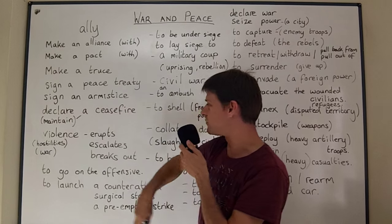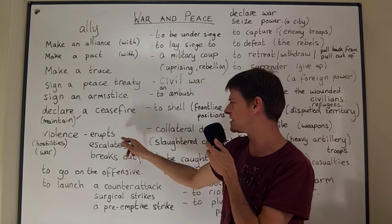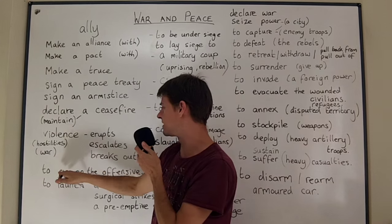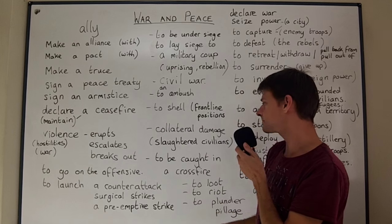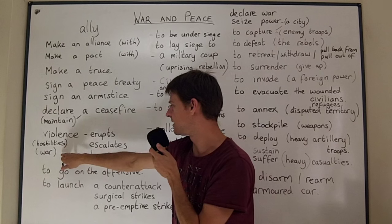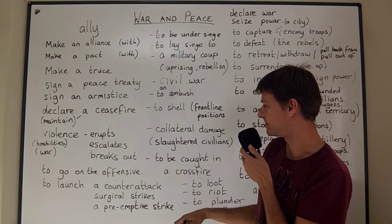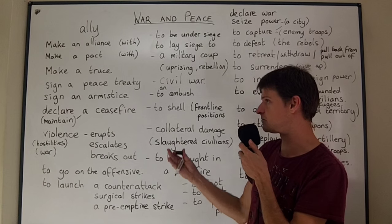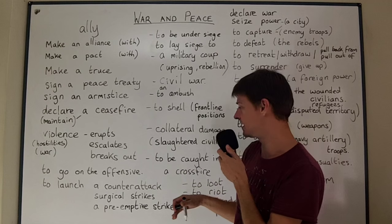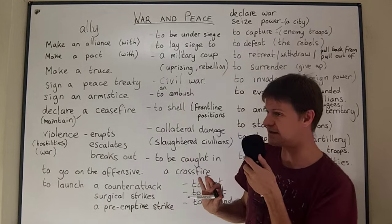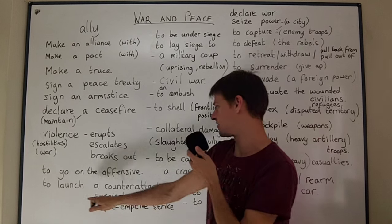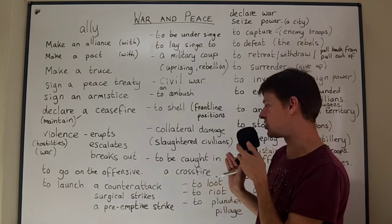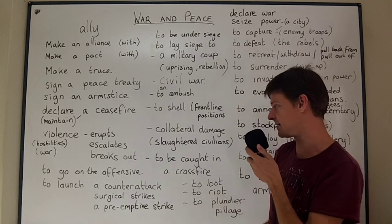If violence erupts, it breaks out very quickly. 'Erupt' is very similar to 'break out', and remember that other bad things can erupt too — like hostilities and war. These nouns collocate with both of those verbs, so please remember those useful collocations. To go on the offensive simply means that one of the two armies stops defending and starts attacking. You could also say they launch a counter-attack — when the enemy is attacking and you fight back in some kind of way.